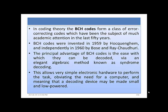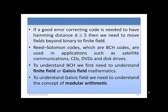Syndrome decoding allows very simple electronic hardware to perform the task, obviating the need for a computer, meaning that a decoding device may be made small and low-powered. If a good error-correcting code is needed to have Hamming distance d greater than or equal to 5, then we need to move beyond binary to finite fields. We will see what finite fields are shortly after.